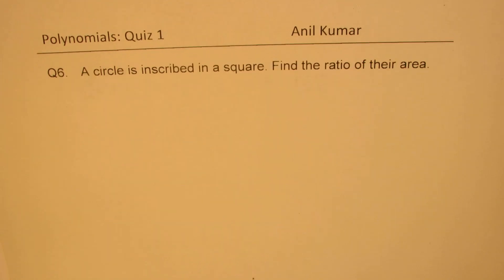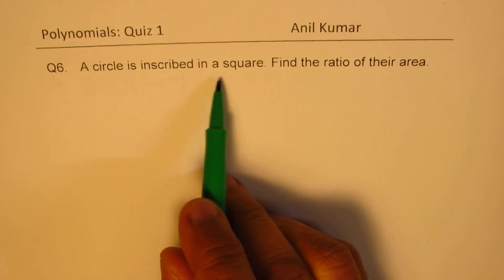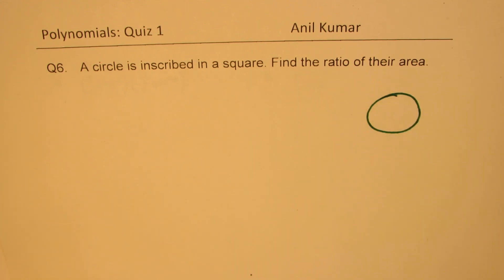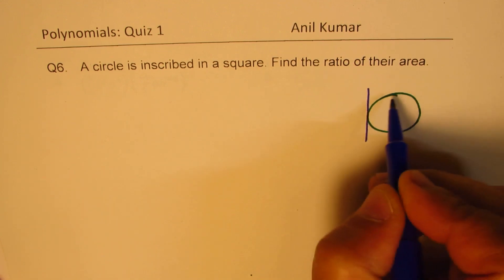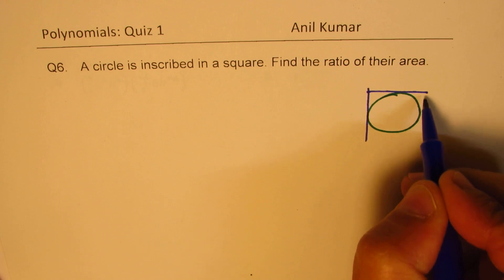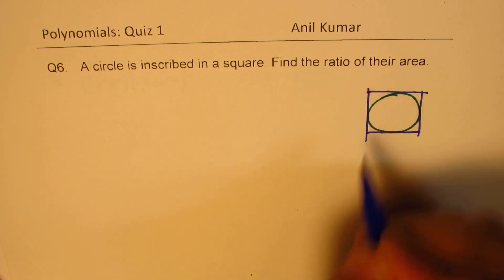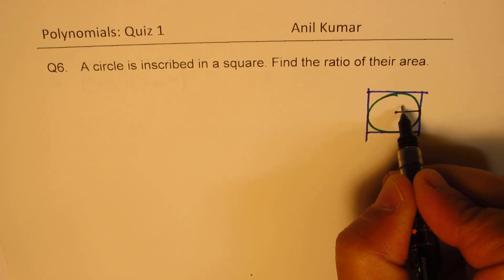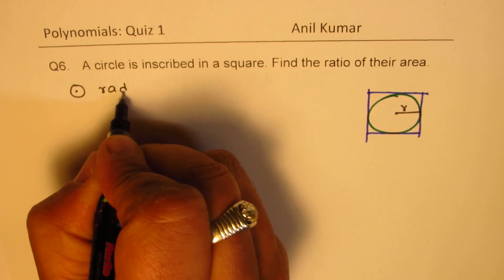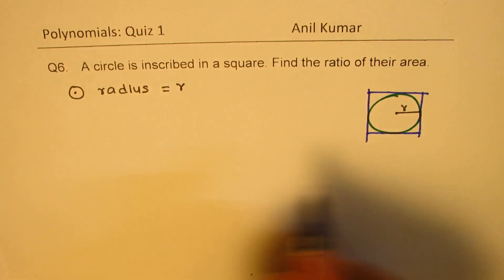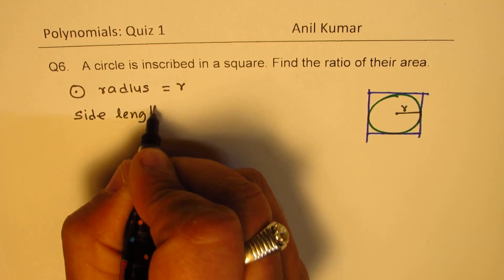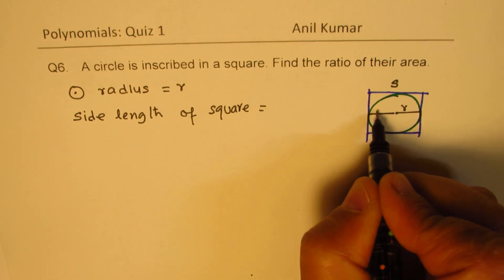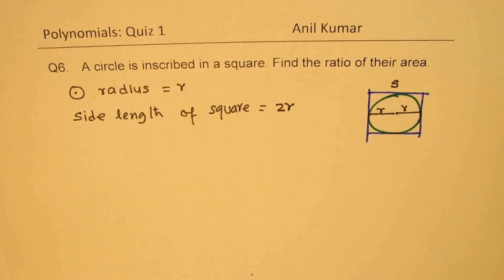Question number 6: a circle is inscribed in a square — find the ratio of their areas. We have a circle inscribed in a square, meaning the square is outside. When we say inscribed, all sides of the square are the same length. We'll take a circle with radius r. In that case, the side length of the square will be r + r = 2r.